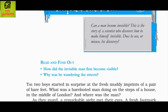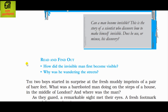Here is a question that can come in the exam: How did the invisible man first become visible? Read the question first, then after reading the chapter we will discuss these questions. Second question: why was he wandering the street? 'Wandering' means bhatakna — he was moving here and there in the streets.